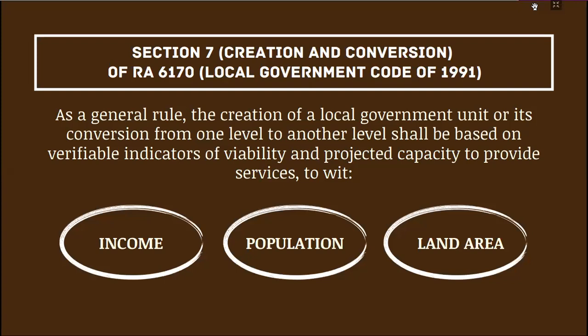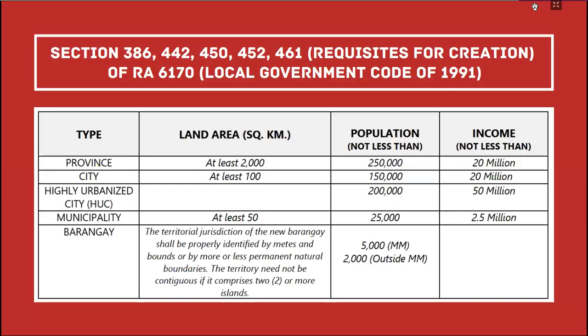Under Republic Act 6170, the Local Government Code of 1991, as a general rule, the creation of a local government unit or its conversion from one level to another shall be based on verifiable indicators of viability and projected capacity to provide services. There are three criteria: income, population, and land area.